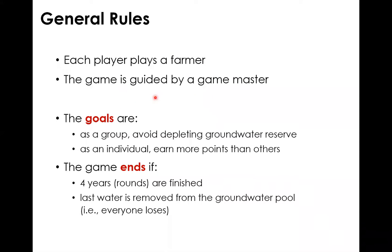In this game, the general rules are: first, each player plays as a farmer; then we need a game master to guide the game. The goal of this game is that as a group we want to avoid over groundwater depletion, and as individual players each one should try to beat the others by earning as much money as possible. The game will end if the maximum number of runs — four years in the board game — is finished. Another termination criterion is that if the last water from the groundwater pool is removed, then everyone loses. So it's like a common resource problem.